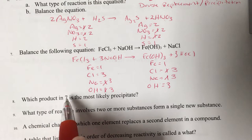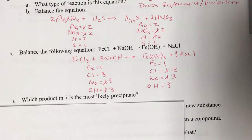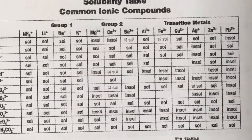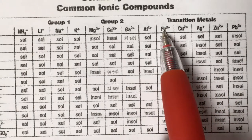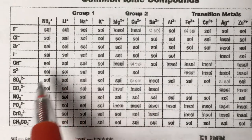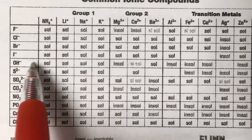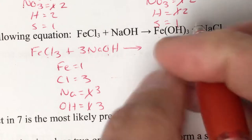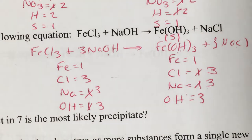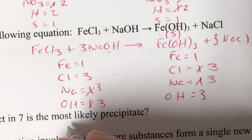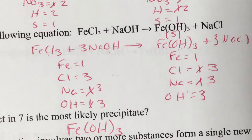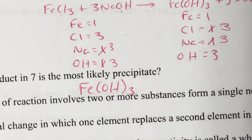Question seven asks which product is likely to be a precipitate. We go to the solubility table looking for the insoluble substance. We have iron and hydroxide. Finding iron on the table and going to the hydroxide row shows insoluble — so iron hydroxide is the precipitate. Salt dissolves in water, so sodium chloride would be aqueous.